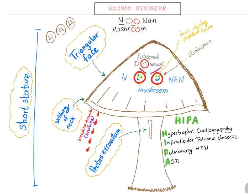Noonan syndrome. This is one of the best mnemonics ever. Noonan has double O, and mushroom also has two O's. This is the mushroom mnemonic for Noonan syndrome. There are four major items, then four letters, and then four minor items.